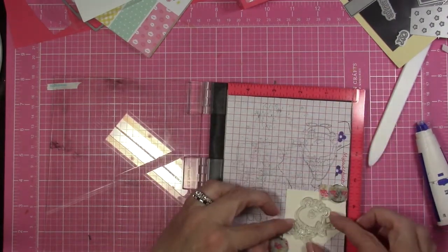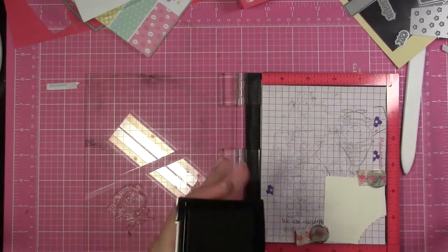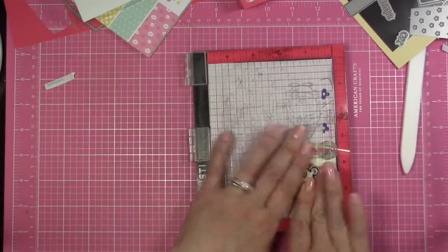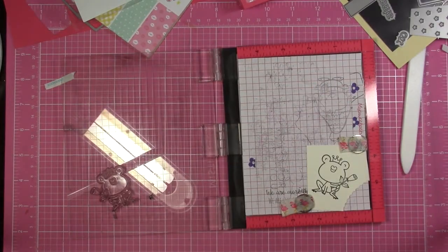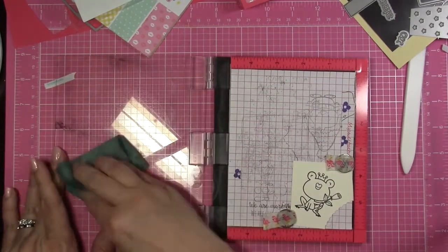I'm going to use some Versamark ink for this because I'm going to be watercoloring. So I want to make sure that my outline of the image isn't going to bleed or anything when I add the water. So I'm going to stamp that twice because it's watercolor paper, so that's a little bit of a rough texture.